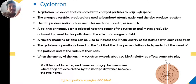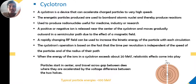These energized particles are used to bombard atomic nuclei, thereby producing reactions. These reactions produce radionuclides useful for medicine, industry, and research. A cyclotron is a useful technique that can be set up in a laboratory space. Positive or negative ions are released near the center of a cyclotron and move gradually outward in a semicircular path due to the effect of magnetic field and a rapidly changing radio frequency AC field, which increases the kinetic energy of the particle with each circulation.